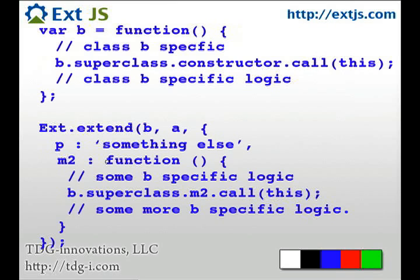But we also want to add more functionality to the M2 function, or method. So, here, we simply show that we have some B-specific logic. And, at any one point in time, we say, now we are ready to use the superclass's M2 method. And we want to execute it with the scope of this, or Class B. And at the bottom, we have some more B-specific logic for the M2 method.